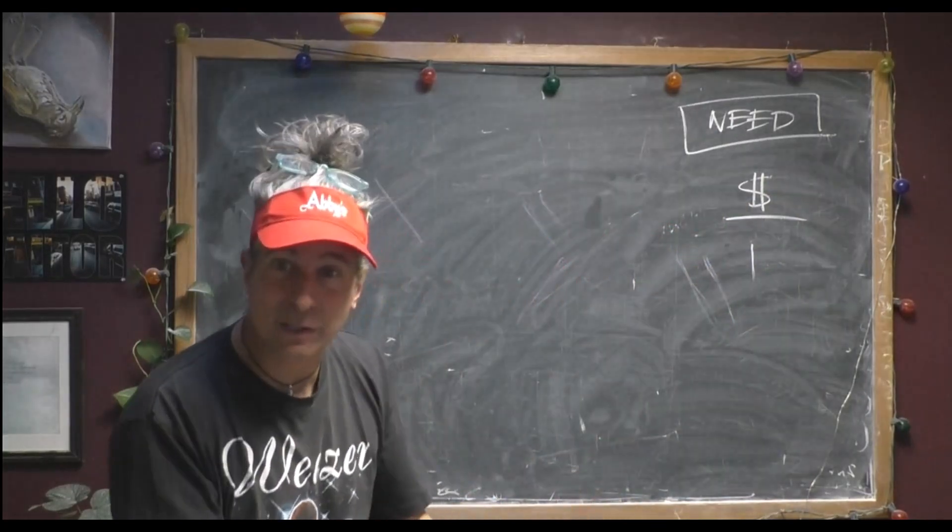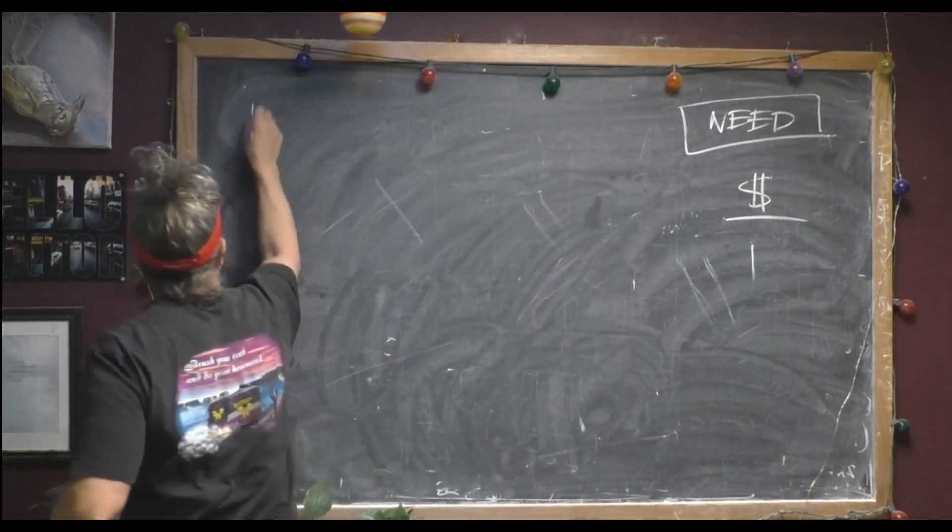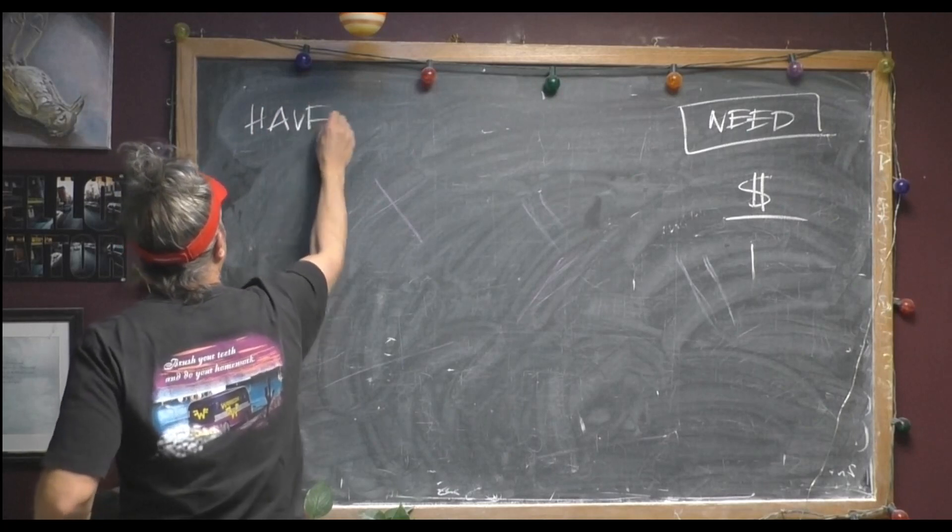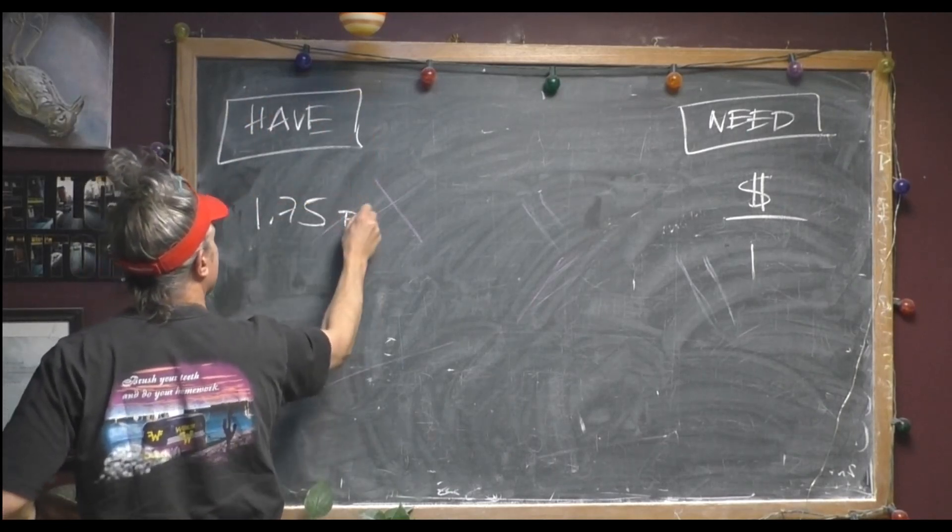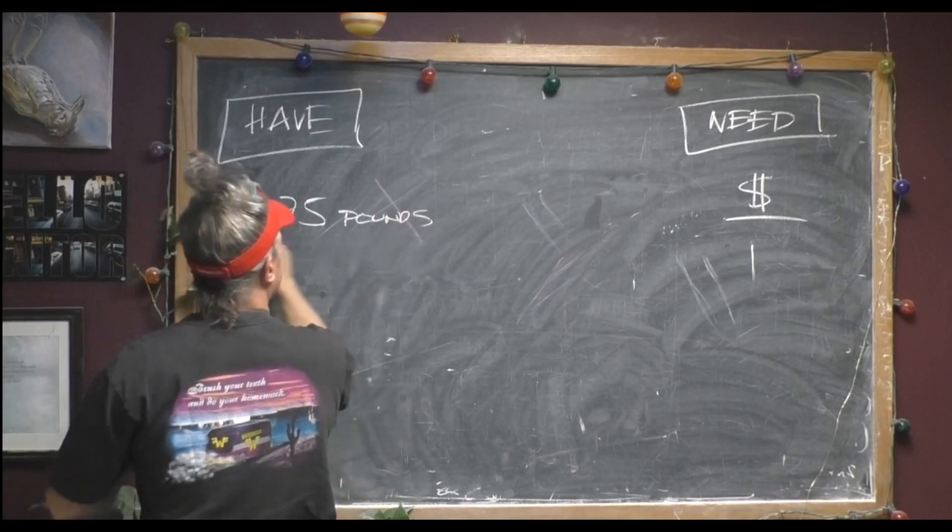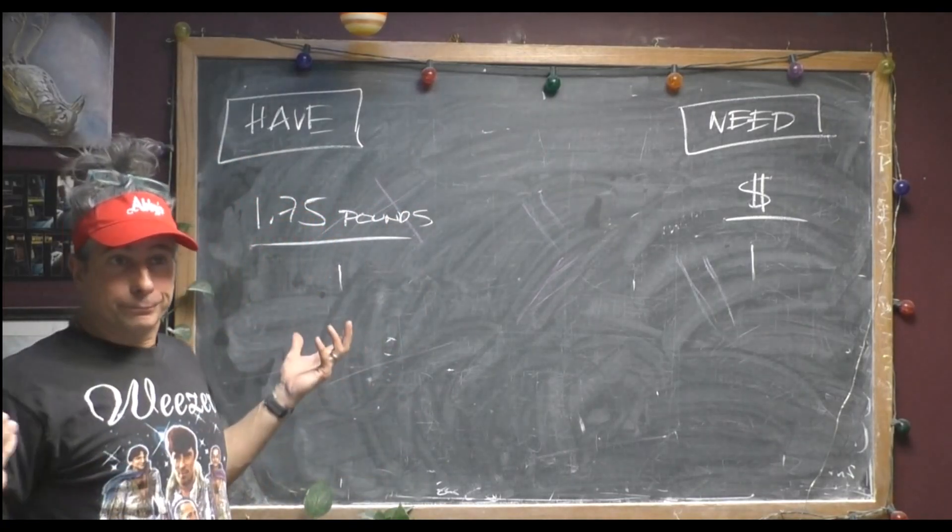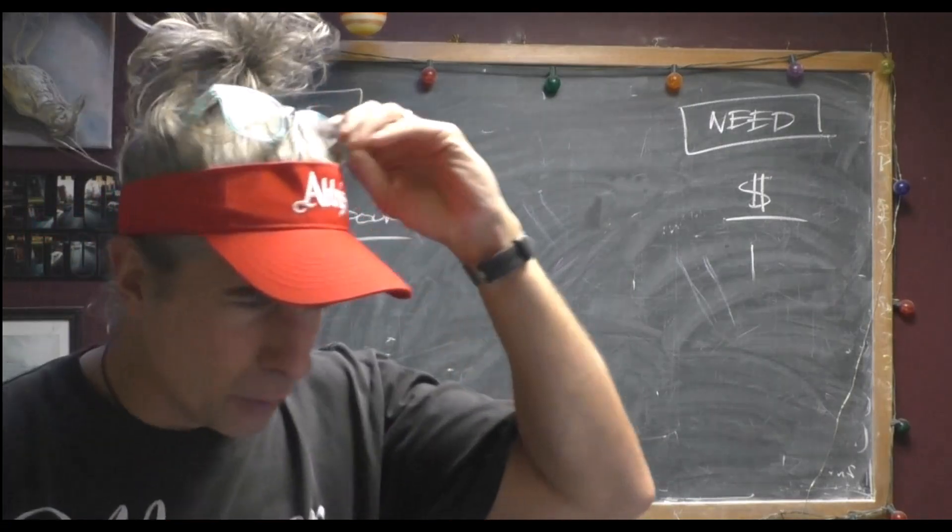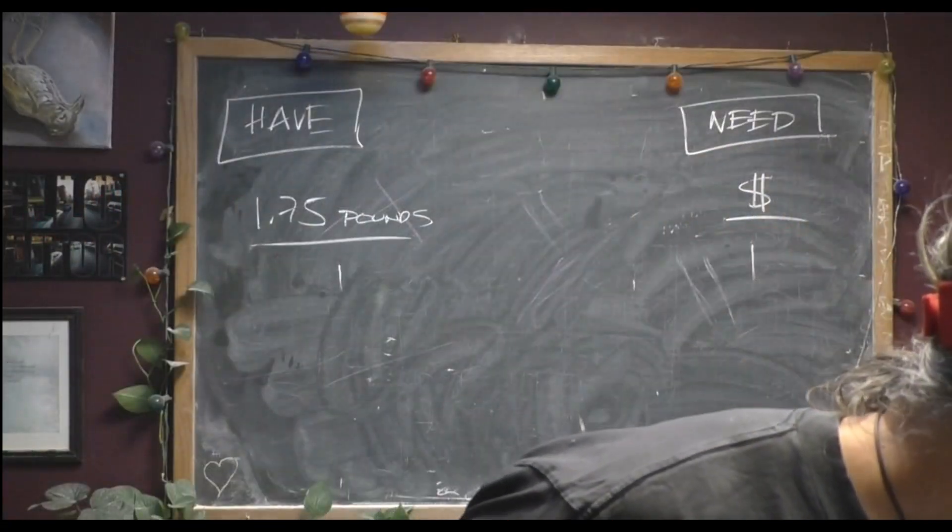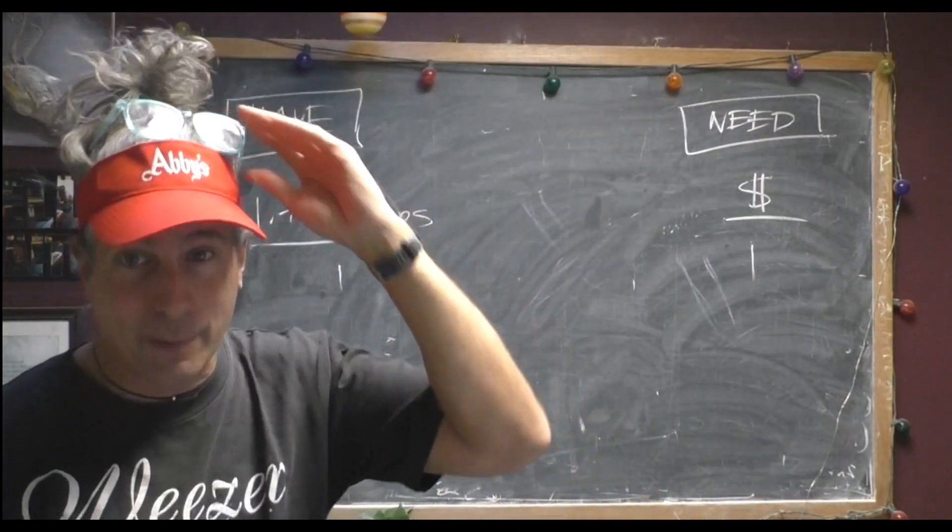We have a package of salmon in front of us that weighs 1.75 pounds. So we just got to figure out what's the conversion between dollars and pounds. And fortunately, they give you that kind of thing at the store. It is $8.50 per pound.